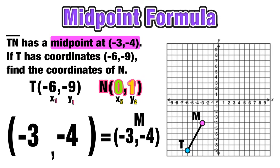We can now plot the other endpoint N at (0, 1), which allows us to construct line segment TN with midpoint M at (-3, -4). As a quick visual method using slope: the slope from endpoint T to midpoint M is up 5, over 3. Repeating this slope from the midpoint — up 5 units and 3 units to the right — takes us to endpoint N at (0, 1).